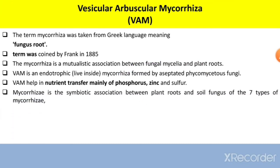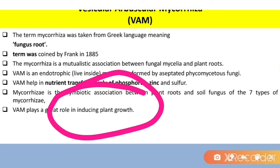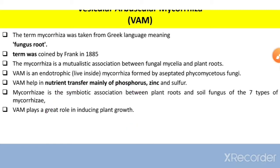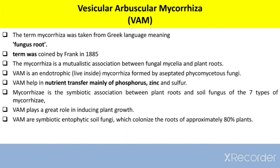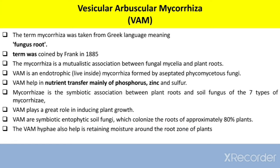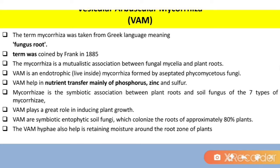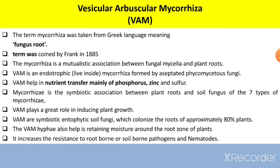Mycorrhiza is the symbiotic association between plant roots and soil fungi. Of the seven types of mycorrhiza, it plays a great role in inducing plant growth by providing nutrition and other factors. They are symbiotic endophytic soil fungi which colonize the roots of approximately 80 percent of plants. The hyphae of VAM help in retaining moisture around the root zone of the plant.